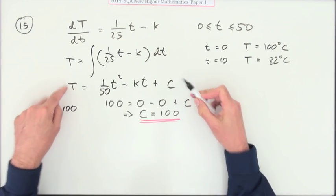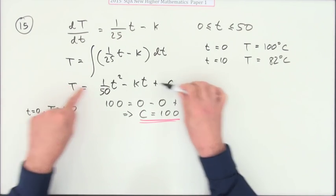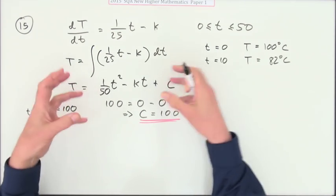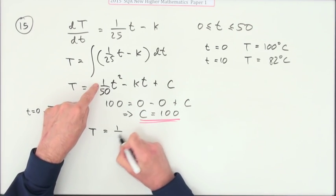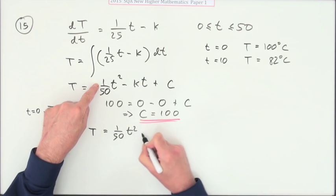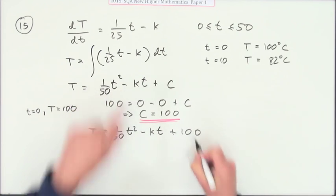Obviously this equation is saying the temperature is 100, and then these terms here will take it down from that. Now I can rewrite that first one because that will be 1/50 of t squared minus kt plus 100.